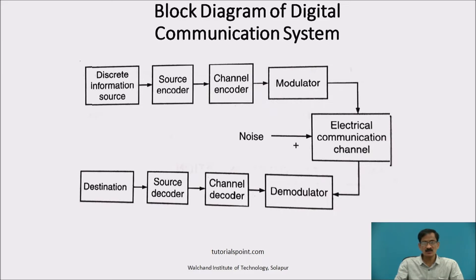A discrete information source at the transmitter will convert the analog signal into a digital signal. This digital signal is converted using a source encoder into a digital form, which will convert into binary bits using a channel encoder. The channel encoder detects and corrects the error, and it has been modulated and sent through the channel. At the receiver, there is a demodulator — that is the quantized signal.